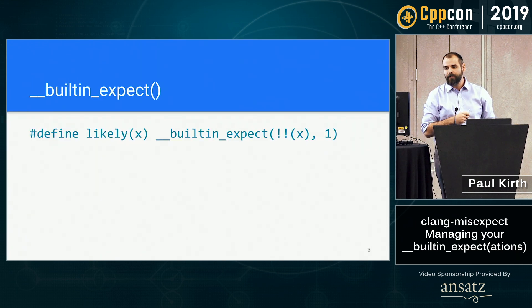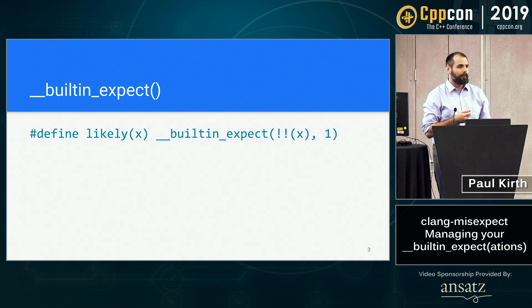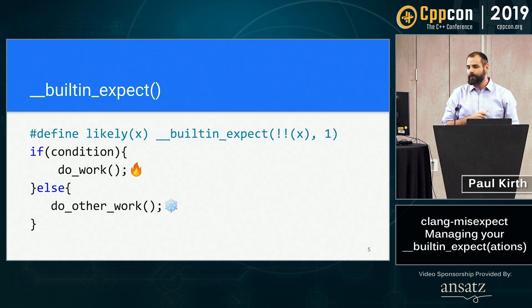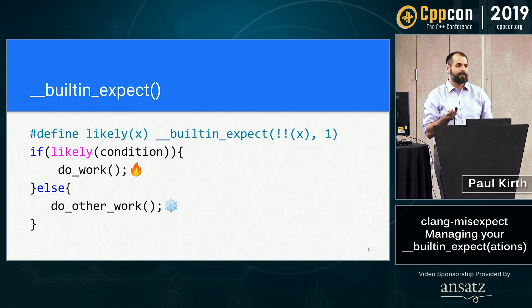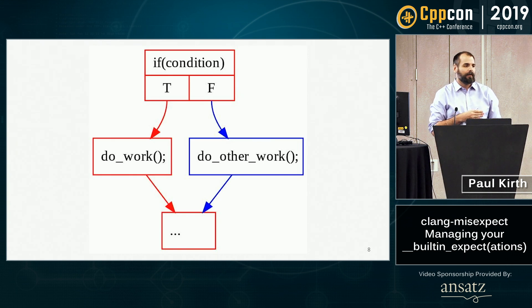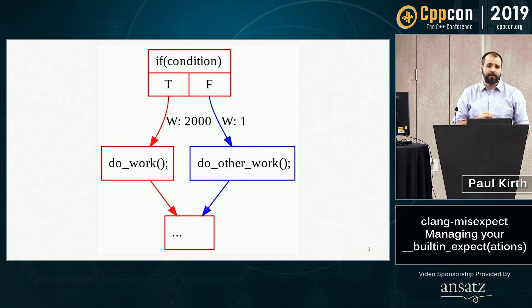Just so we're all on the same page, built-in expect is a compiler intrinsic used for performance optimization. Most of us are probably more familiar with its use in the likely and unlikely macros. So if I have some kind of conditional branch and I think one part of the branch is going to be hotter than the other, I can let the compiler know how I expect this to behave at runtime by adding an annotation like this. In the control flow graph, I've said that there's a particular path that's going to be really hot, and the compiler takes that information and remembers it in the form of branch weights, which it uses later in the optimization pipeline to optimize the hot part of my code path.